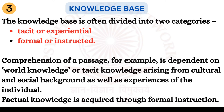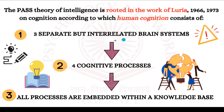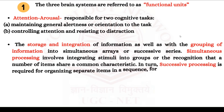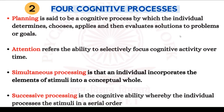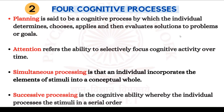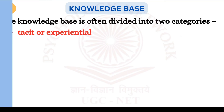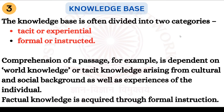So this was all you needed to know about the PASS model of intelligence. We studied the three interrelated brain systems, also called functional units. Then we studied the four cognitive processes — remember these especially: planning, attention, simultaneous processing, and successive processing. You might easily remember planning and attention, but may forget simultaneous and successive processing. In MCQs that UGC NET asks, they might confuse you on these, so remember them well. And then the knowledge base, which is tacit or experiential, or formal or instructed.